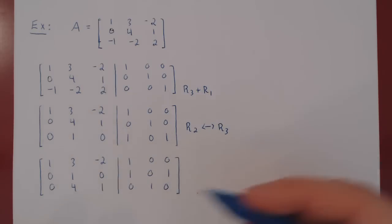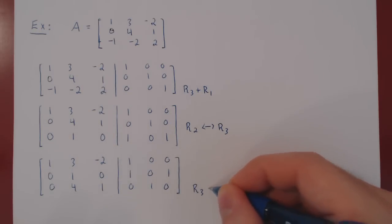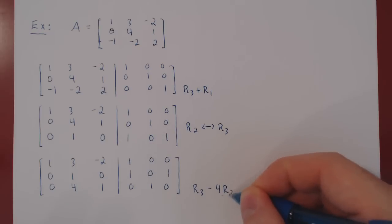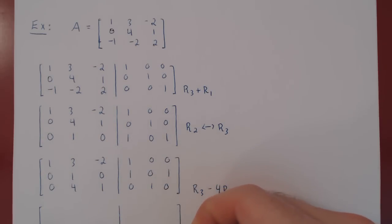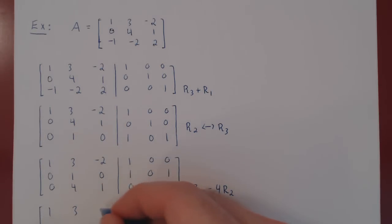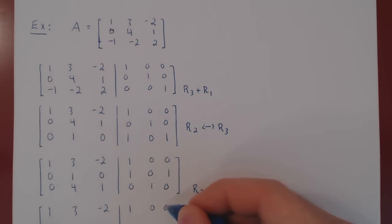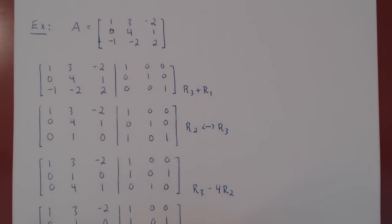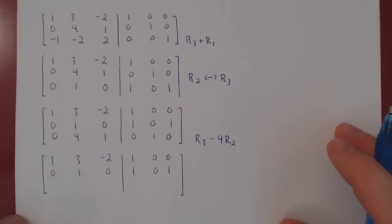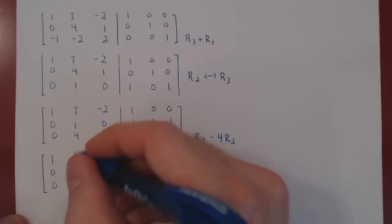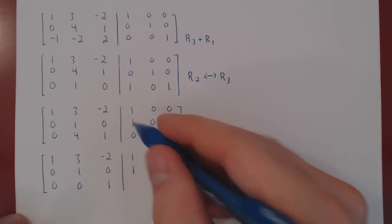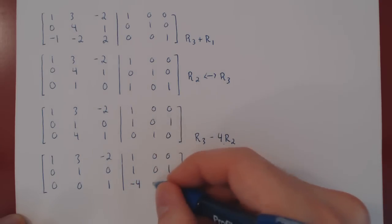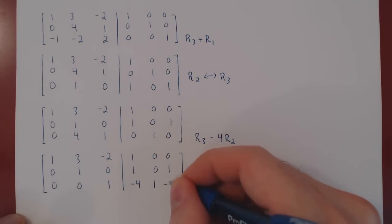We now have a second leading 1. To scale away the 4, we perform row 3 minus 4 times row 2. Copying the first two rows, and applying the operation: 4-4=0, 1-0=1, 0-4(1)=-4, 1-0=1, 0-4(1)=-4.